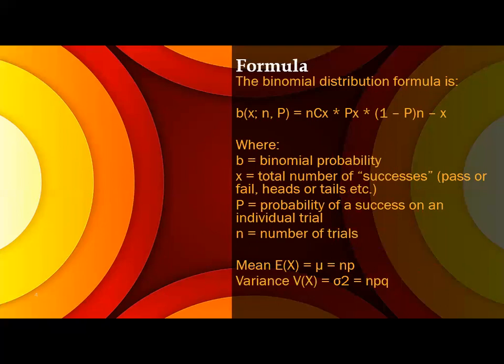So b is the binomial probability that we saw. x is the total number of successes what we expect. P is the probability of success on the individual trial, and n is the number of trials.